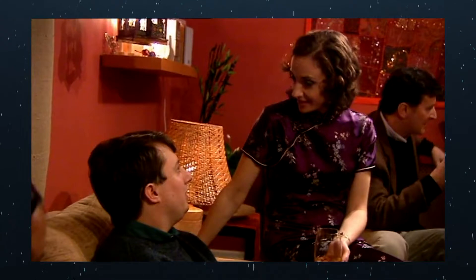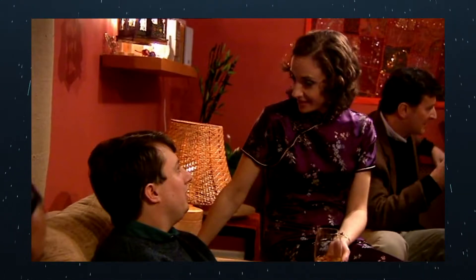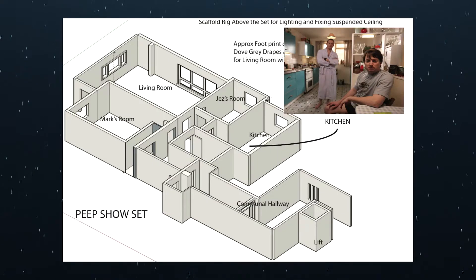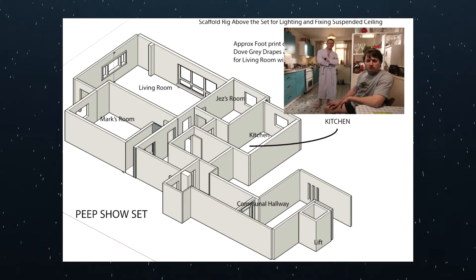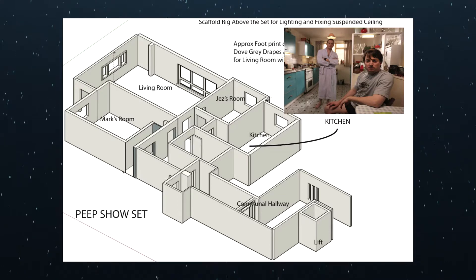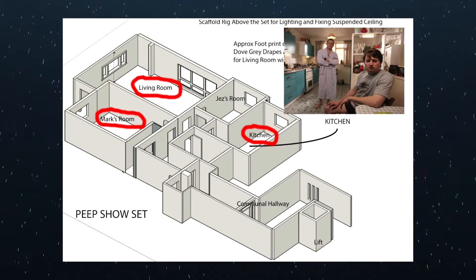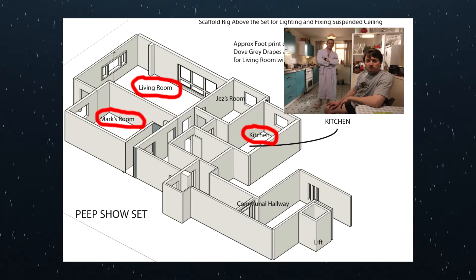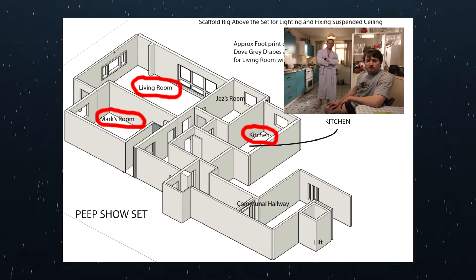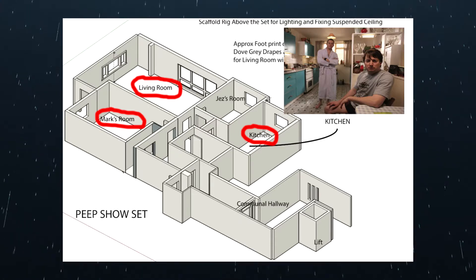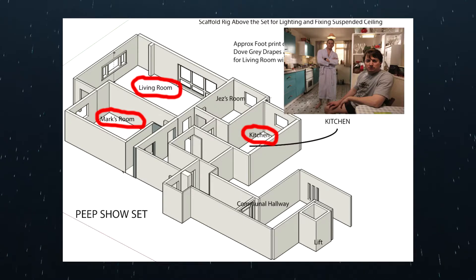Through the covering up and blocking of certain aspects of the interiors, as well as only filming from certain angles, the show pulls off this limitation extremely well. Here's a pretty rare behind-the-scenes image of Mark and Jeremy's flat as used by the art department during production. Only three of the rooms of Tony's flat are ever shown: the living room, the kitchen, and the big bedroom — aka Mark's room. Let's start with the living room as that's the most used location in both flats.